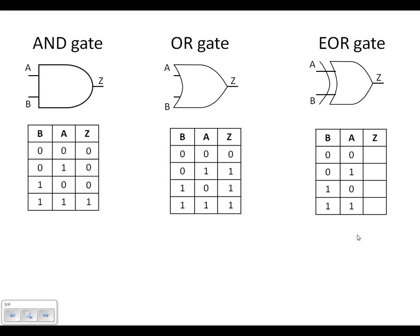The exclusive OR gate is when A is high on its own — in other words, A is high and B is low, or when B is high and A is low, which is here. All other combinations the output is 0.